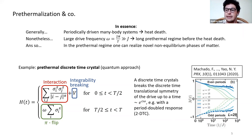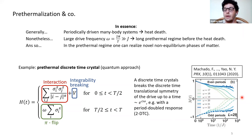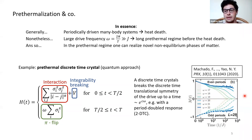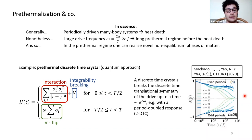When we increase the frequency, this sub-harmonic response at frequency one-half of the drive lasts longer and longer. In this pre-thermal regime, the discrete time-translational symmetry of the drive is broken by a factor of two — a period-doubled response — which is what we call a pre-thermal discrete time crystal.